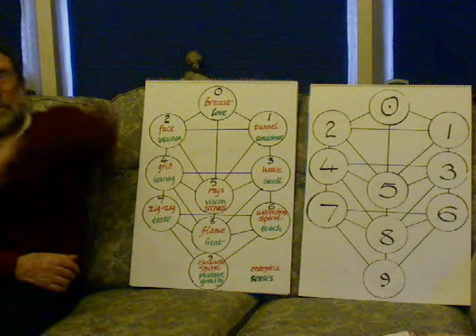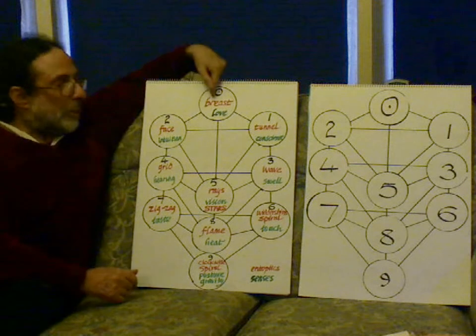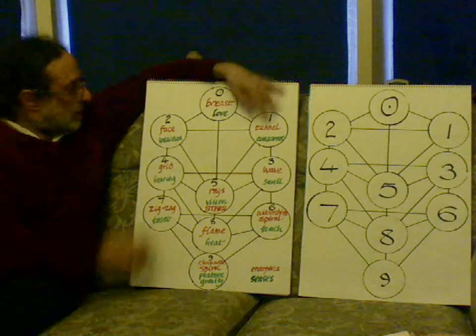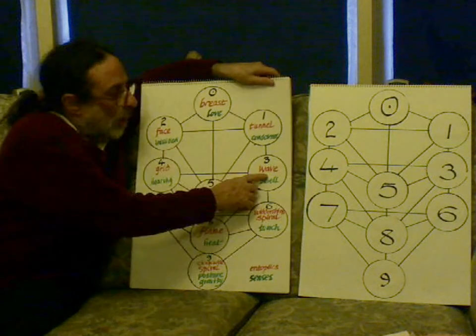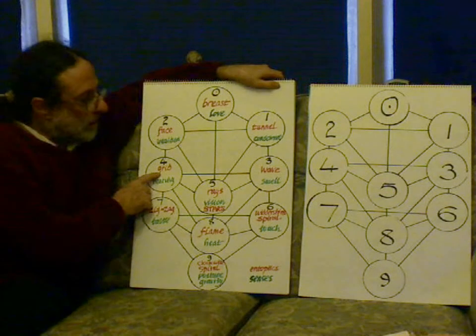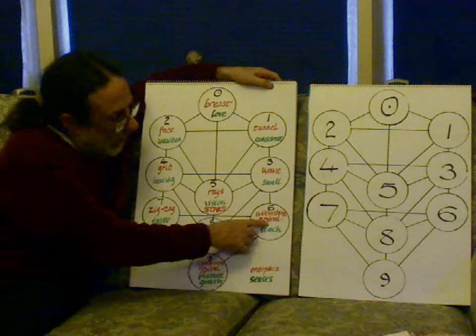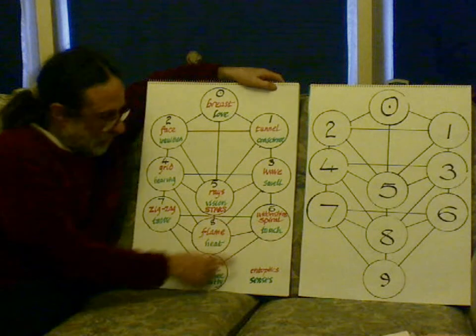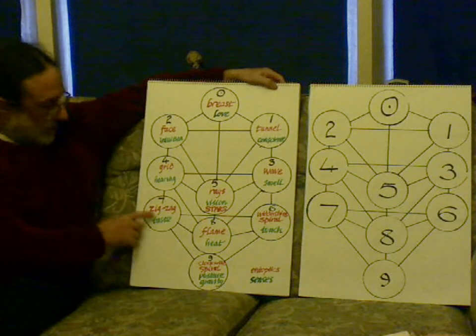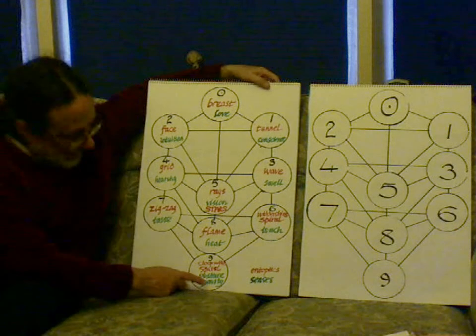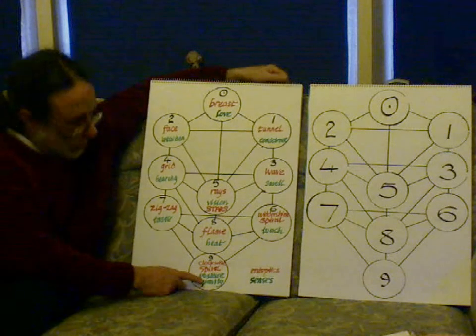So these are the Entoptics, the patterns that we see in our minds: breast, tunnel, face, wave, grid, stars, spirals, widdershins spirals, flames, zigzags, and the clockwise spiral.